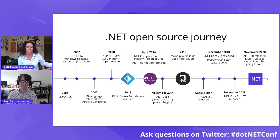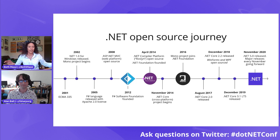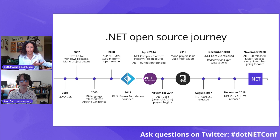ECMA 335 was the first spec released as open source for the Common Language Infrastructure, which is really about multi-language support on the same runtime — what .NET is all about. At the same time, the Mono project began. Microsoft implemented ECMA 335 for Windows specifically, while Mono began fully in the open source world as an implementation for Linux.